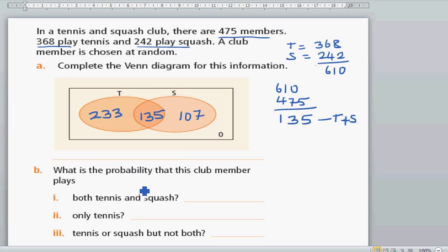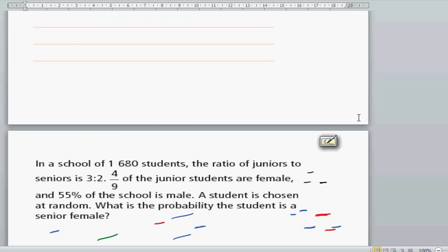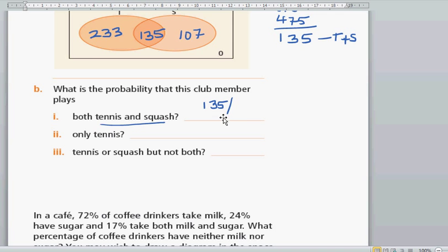What's the probability that this club member plays both tennis and squash? So that's going to be 135 out of 475. Sorry, 135 out of 475.